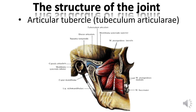Articular tubercle, tuberculum articulare. This is a bone thickening of the posterior zygomatic process of the temporal bone. With vertical movements of the lower jaw, the head slides along its rear slope, and at the maximum opening of the mouth it stops at its apex. The height of the articular tubercle varies with age and dental occlusion.